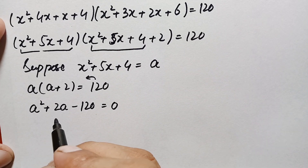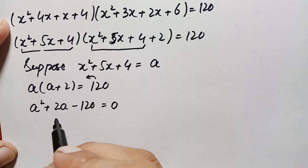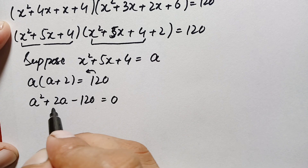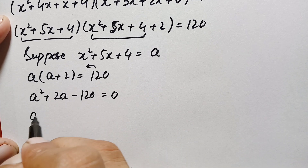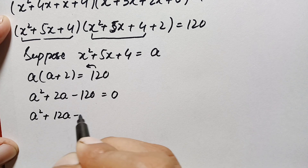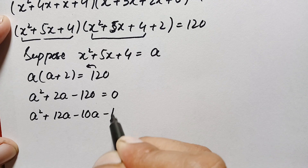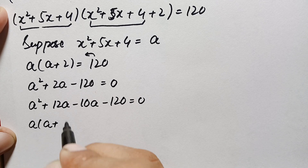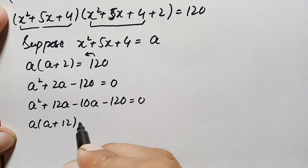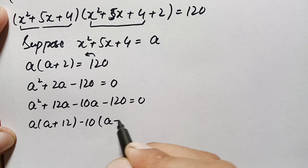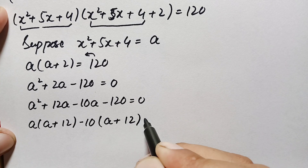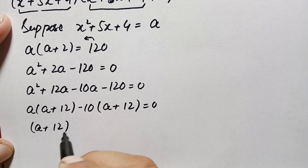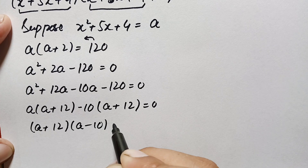Now this is a quadratic equation. We need to factorize it by finding two numbers whose product is −120 and sum is 2. Those numbers are +12 and −10, giving a²+12a−10a−120 = 0. Taking out common factors: a(a+12) − 10(a+12) = 0, so (a+12)(a−10) = 0.